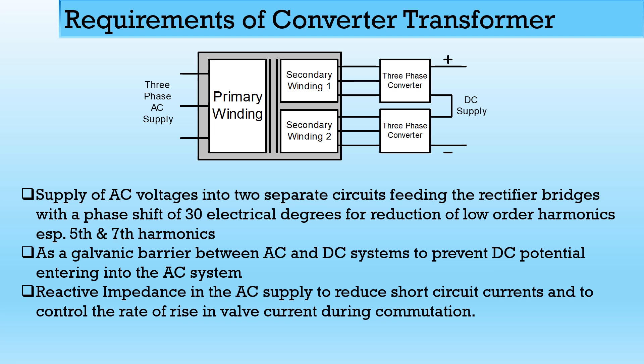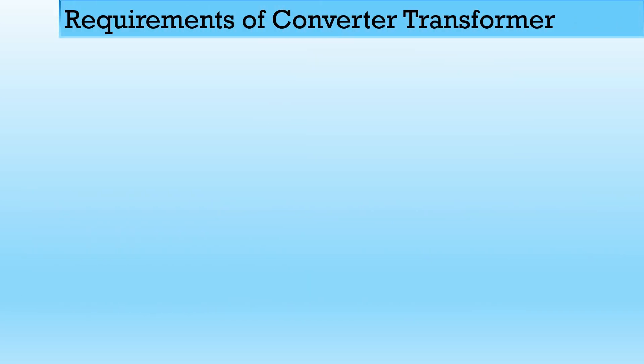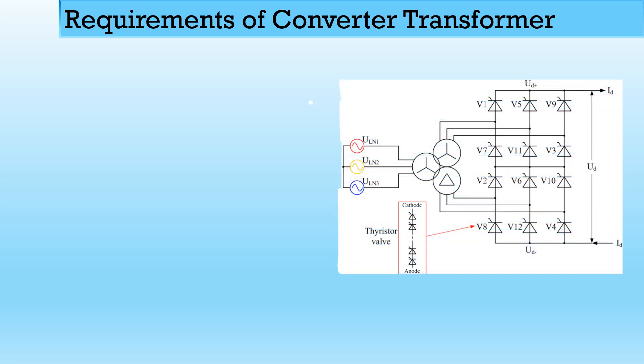Another requirement is reactive power impedance in the AC supply to reduce the short circuit current. As the reactive impedance increases, the short circuit current decreases, and hence the rate of rise of current in the commutation process also decreases. The three-phase voltages are connected to the star of the primary, and the secondary has a star and delta connection. The star connection with the primary star gives 0-degree phase shift, and the delta connection gives 30-degree phase shift.